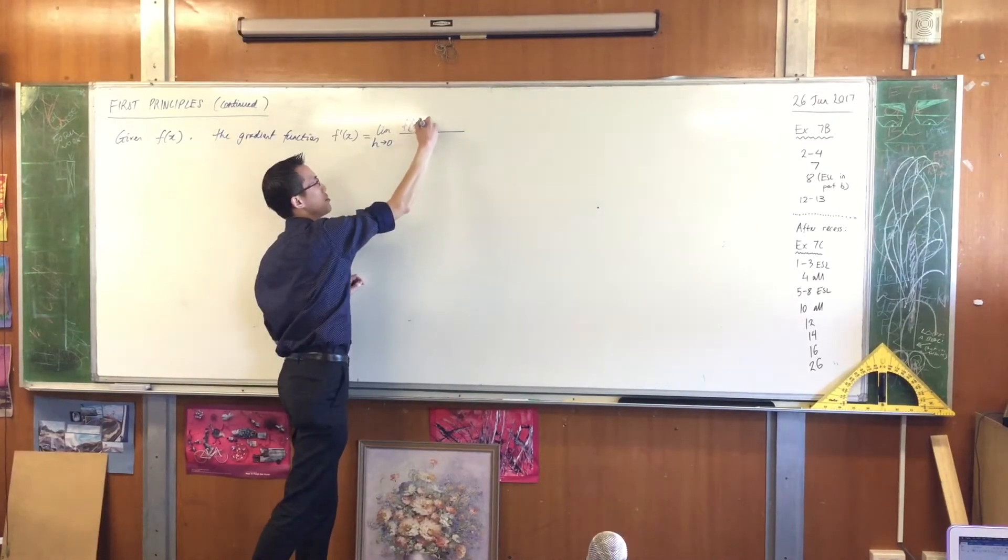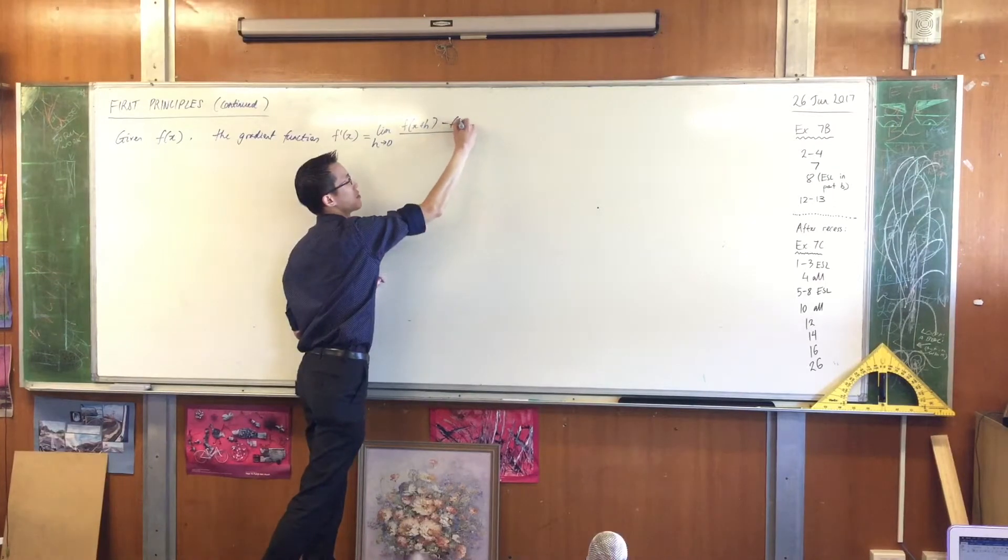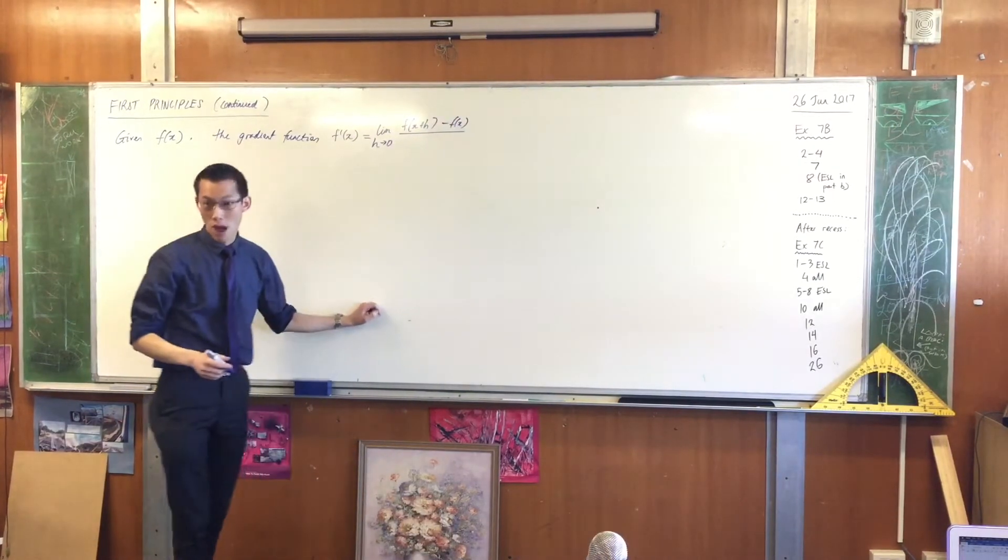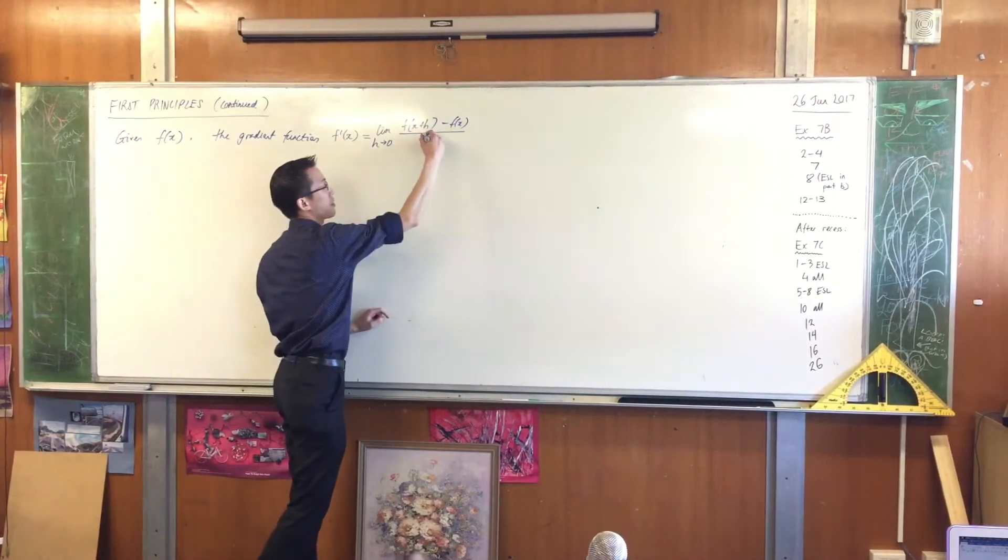In the particular setup that we had, the rise was f of x plus h, and you take away f of x. The run is going to be this horizontal distance, h.